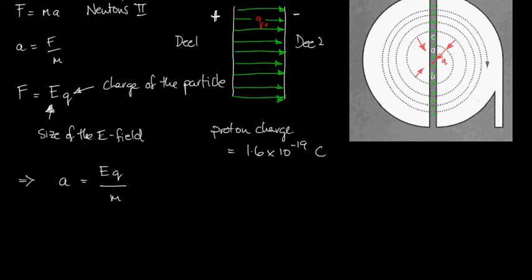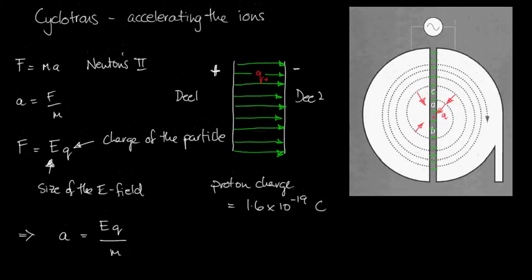We can calculate E knowing delta V and D. What's delta V? Well delta V is this potential difference here. I'll just write that in there: delta V, potential difference between the d's. And D is the distance between the d's, that's D there, how far they are apart.